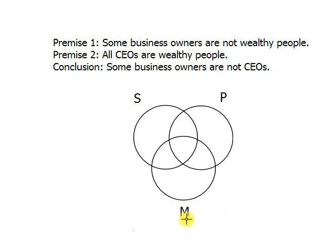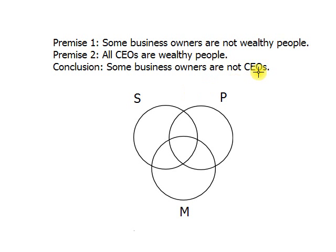Fortunately, this is always given to us. If we know the conclusion and the arguments are put into proper standard form, the S-term of the conclusion is always our S-term. In the case of 'some business owners are not CEOs,' the subject is business owners, so business owners is the S-term. The predicate term of the conclusion — in this case, CEO — is our P-term.